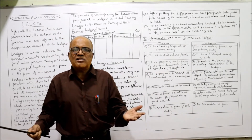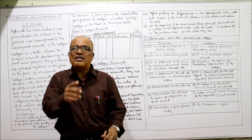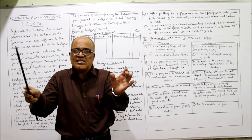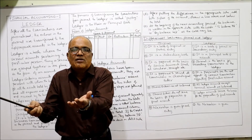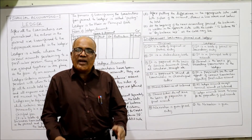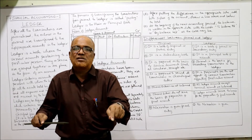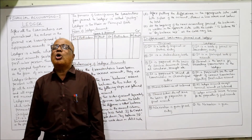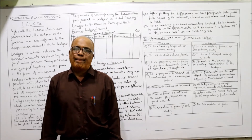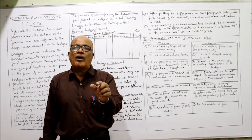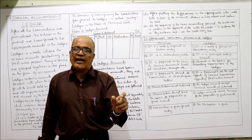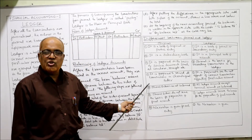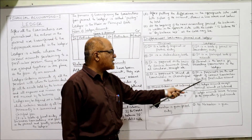Whereas in ledger, the journal itself is the basis for recording transactions — ledger does not require separate source documents, it only requires that the transaction should be there in the journal. Additionally, journal records transactions in chronological order — date-wise, one after another — whereas ledger is prepared to see the net effect of various transactions affecting a particular account.